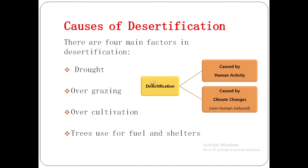Next are the causes of desertification. The main factors include drought, overgrazing, over-cultivation, and trees used for fuel and shelter. Desertification is caused mainly by two factors: either human activities or non-human activities. Non-human activities or effects include climate change.